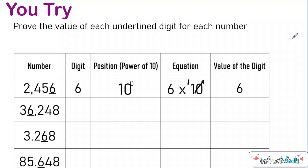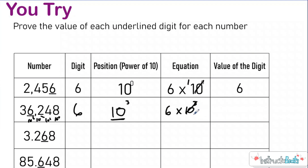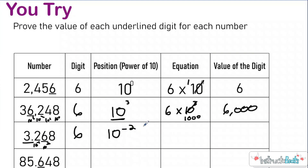Hopefully you just paused and now you're ready to check it. Here we have the digit six. The positions would be 10 to the zero power, 10 to the first power, 10 to the second power, 10 to the third power. So the position would be the third position — this is base 10, that's the position it's in. So my equation is six times 10 to the third power. Well, 10 to the third power — 10 times 10 times 10 — has a value of 1,000. So six groups of 1,000 would be 6,000. For the next one, my digit is six, and this one is in the second position to the right of the ones place in the decimal, so this would be 10 to the negative second power. My equation would be six times 10 to the negative second power — the negative second power is really just the hundredths place — so six groups of one-hundredth would be six-hundredths.